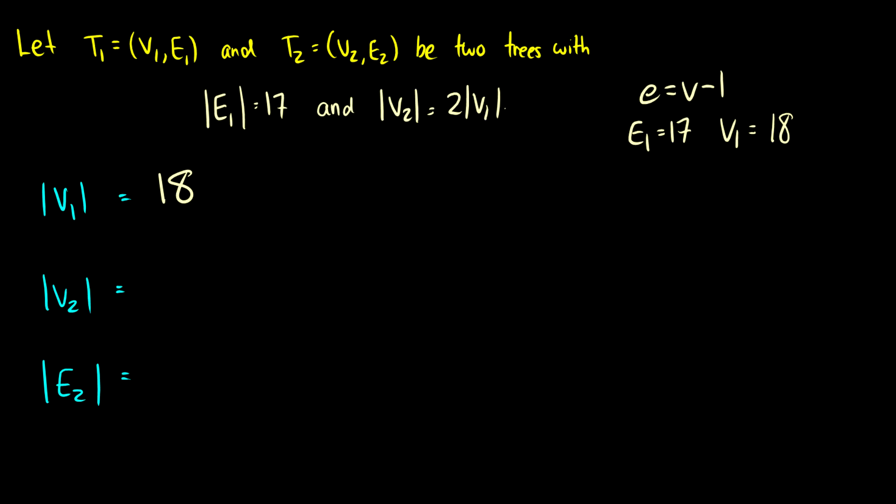V2 is 2 times V1. So that's going to be 2 times 18, which is 36. And E2 is equal to the number of vertices in graph 2 minus 1. So E2 must be 35. So V2, 2 times V1, 18 times 2 is 36. And of course E2 is going to be V2 minus 1. So that's 36 minus 1, which is 35.